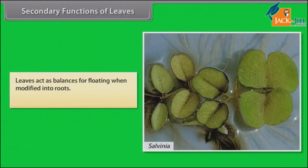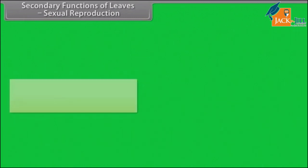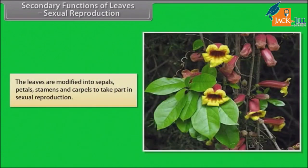Leaves act as floats for floating when modified into roots. Example: Salvinia. Sexual reproduction: the leaves are modified into sepals, petals, stamens and carpels to take part in sexual reproduction.